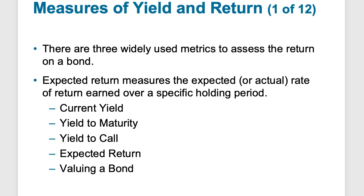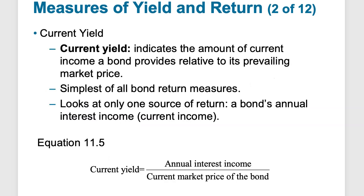There are three widely used metrics to assess the return of a bond: current yield, yield to maturity, and yield to call. Current yield is simply the annual interest income divided by the current market price of the bond. Between issuance and maturity, the bond can trade at any price depending on interest rate changes. The coupon payment is the current yield on the day the bond is born, but as the market price of the bond changes, that current yield changes. This is the simplest measure of a bond's return.